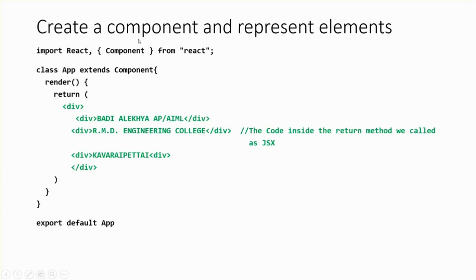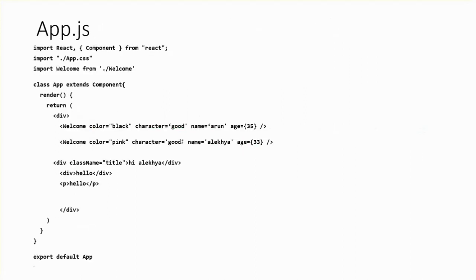From this code you can understand how to create a component and what the syntax is: the import statement, React, and within flower braces you have to create a Component — from React. After writing your statements inside the return method, you close the class and the render function, and then you have to export this app class to ReactJS. So this is the procedure — whenever you create a component, you use two statements: import at the start and export at the end.